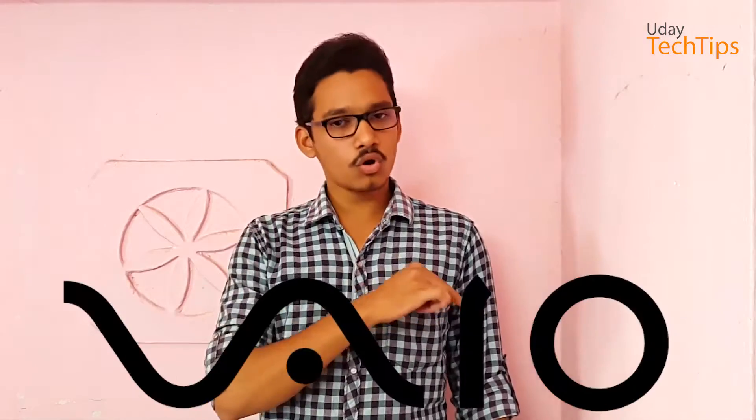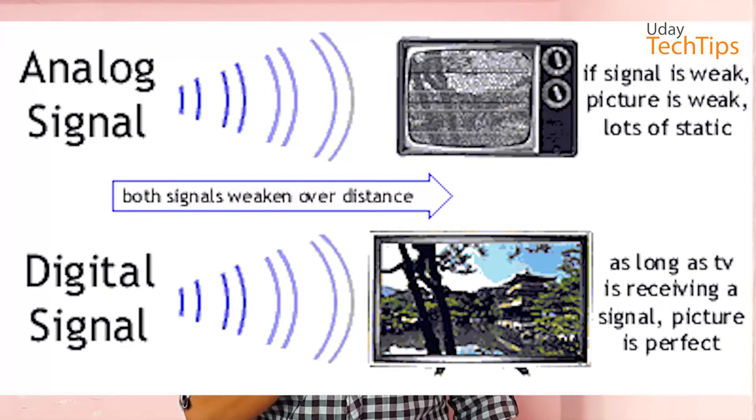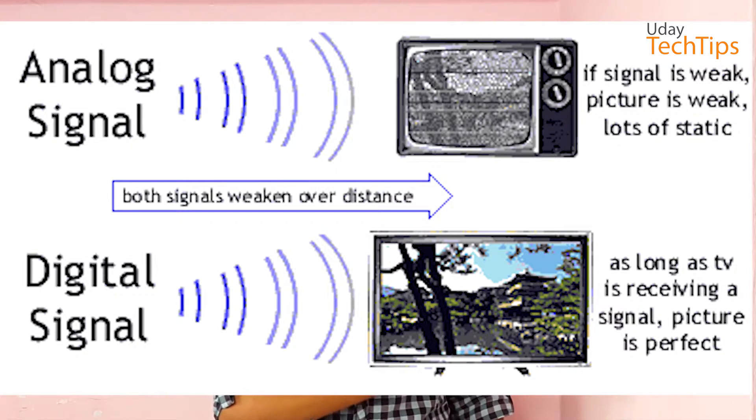Sony Vaio's logo has a clever meaning. The first part represents the analog symbol, and the second part represents a digital signal. It means that Sony converts analog signals into digital signals. This type of design is symbolic.